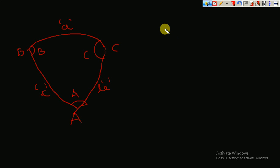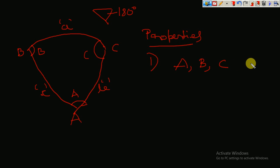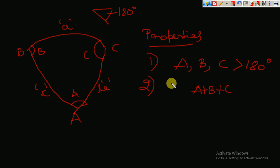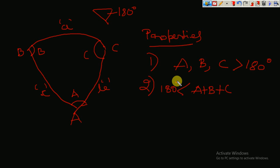Now let us see the properties of the spherical triangle. The first property is the difference already mentioned: a normal triangle has a total angle of 180 degrees, whereas in a spherical triangle the total angle — that is, angle A plus B plus C — should be more than 180 degrees. The second property is that the sum A plus B plus C should be more than 180 degrees and less than 540 degrees.